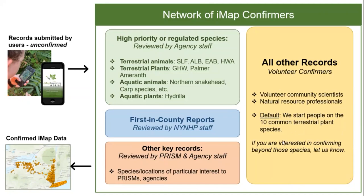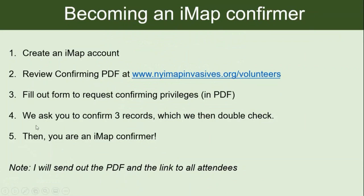People can move on to species beyond the initial ten if they ask us. Many people here are already part of the confirming network, but for anyone who is not and is interested, here are the steps to join: you need to have an iMap account; we have a PDF that goes through the confirming process and I'll send that out at the end of the webinar. There's a form to fill out to request confirming privileges. Once you fill it out, we reach out, ask you to confirm a couple of records which we double-check, and once everything's sorted out, you're on your way as an iMap confirmer.